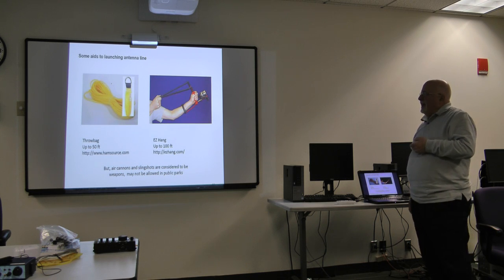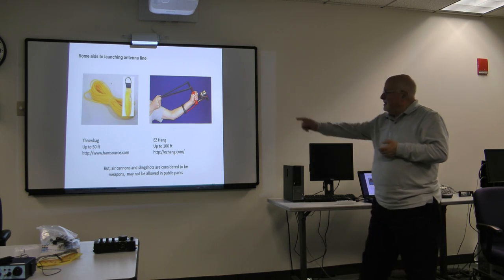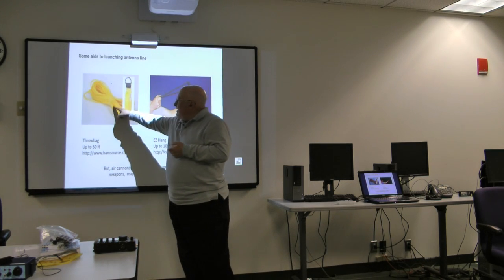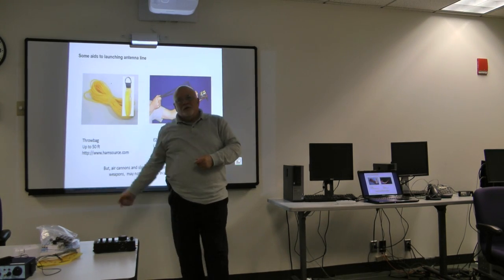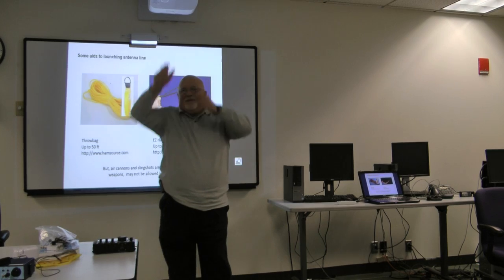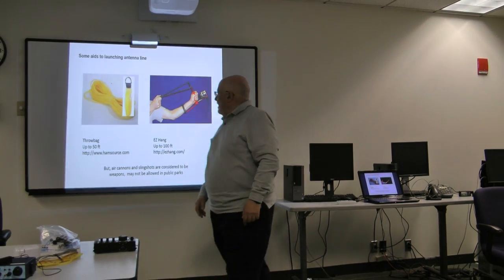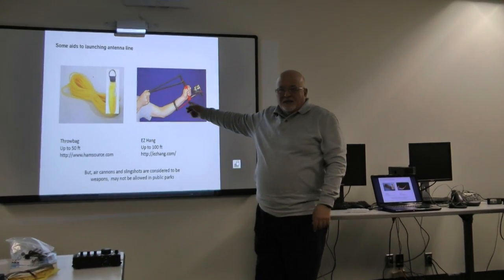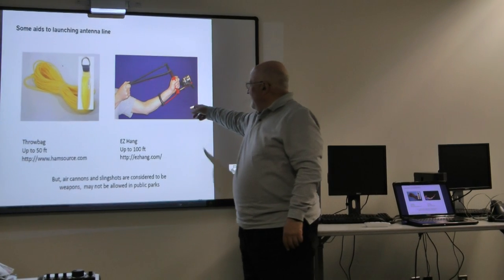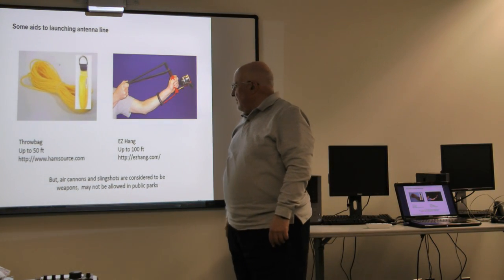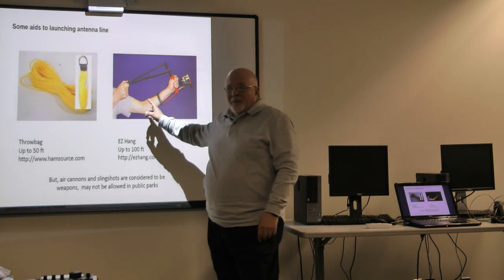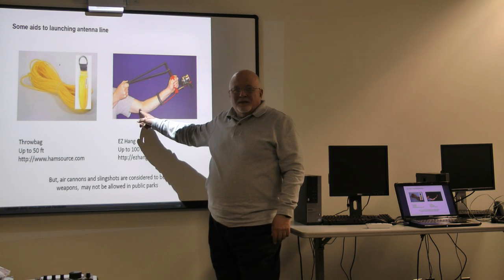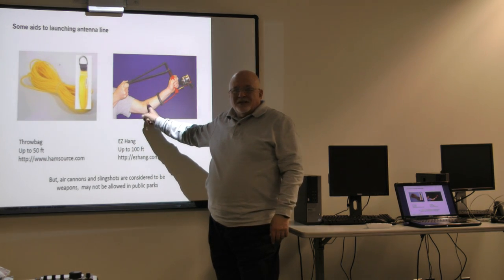Some of the aids to launching antenna wires. This is something that John sells. This is a weight with a rope. Get it up into a tree. Slingshots. You've seen slingshots. You know about slingshots. This is the easy hang. Really nice slingshot. But this may not be allowed in public parks because it's considered a weapon.